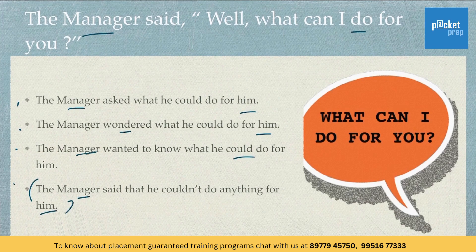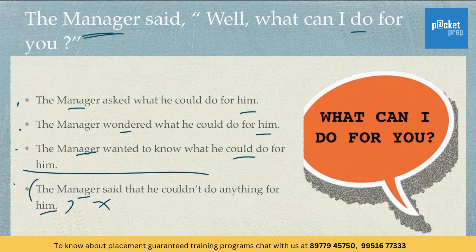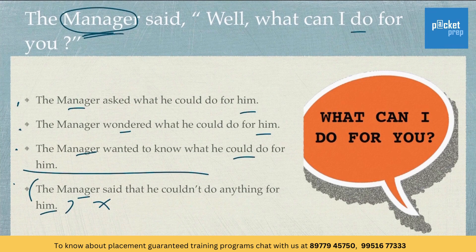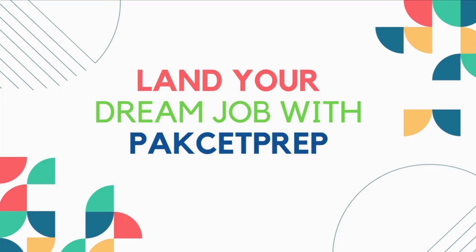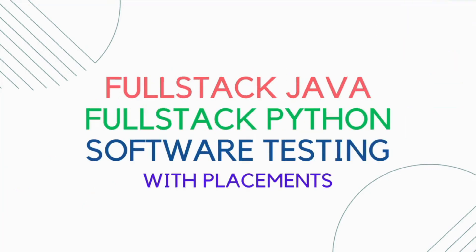Please eliminate option D — this is absolutely wrong. Now, if you observe the question clearly, the manager actually wanted to know what he could do for him. He was not wondering. So option B is wrong. There is a slight confusion between option A and option C, but option C is more relevant. So C is the right answer.